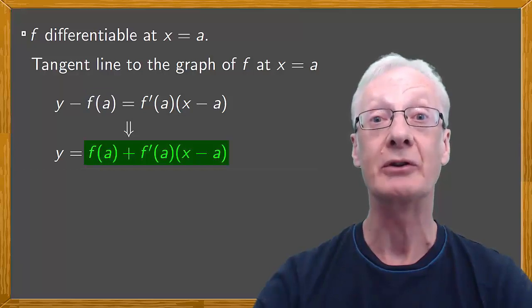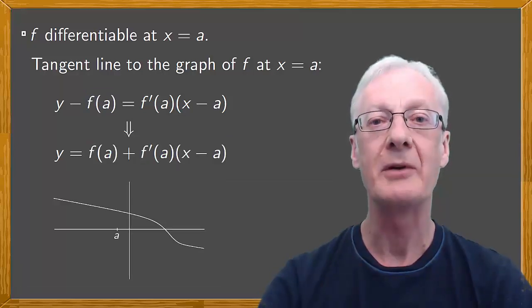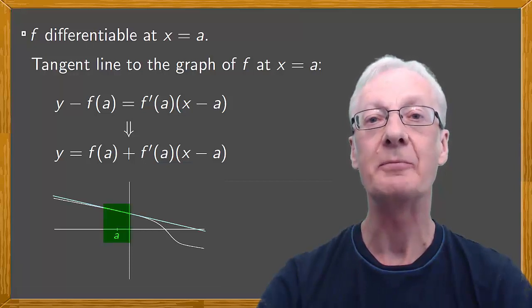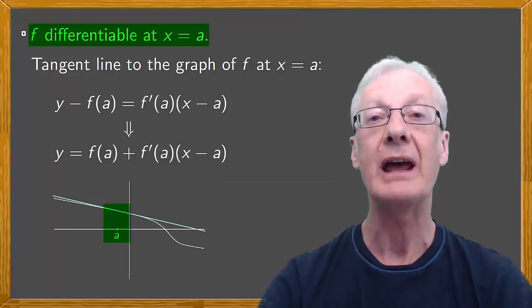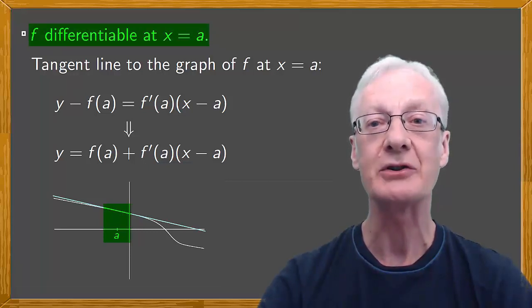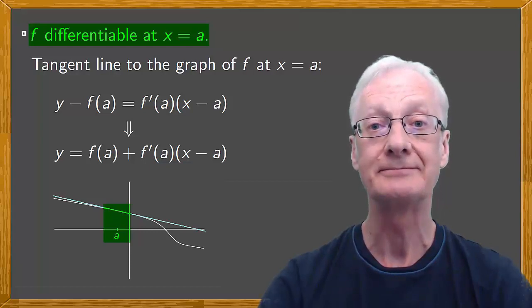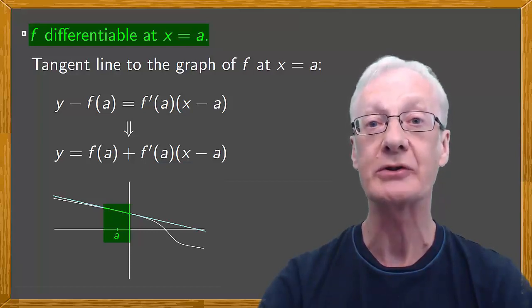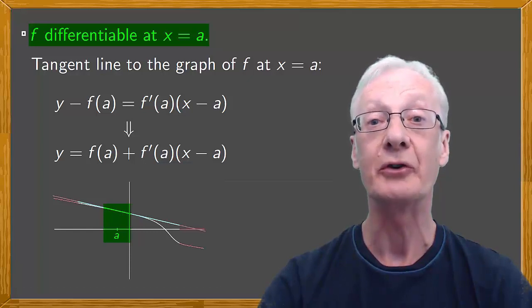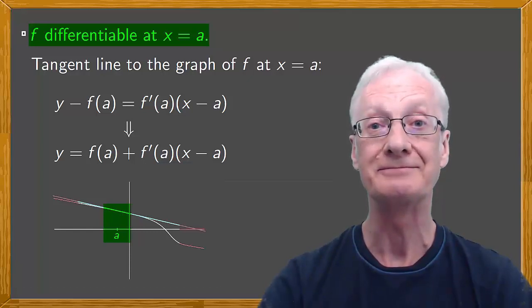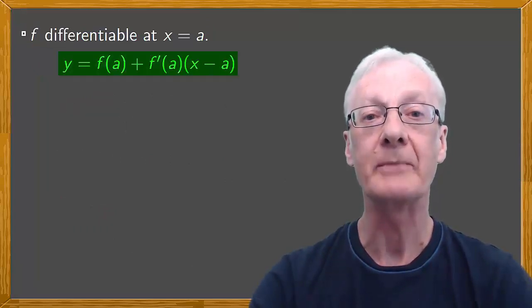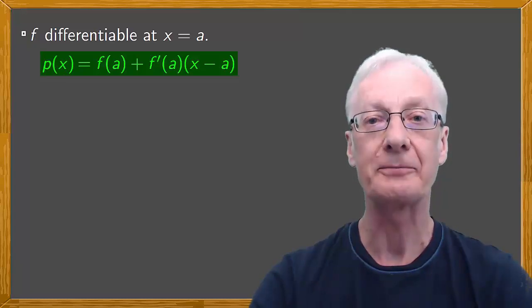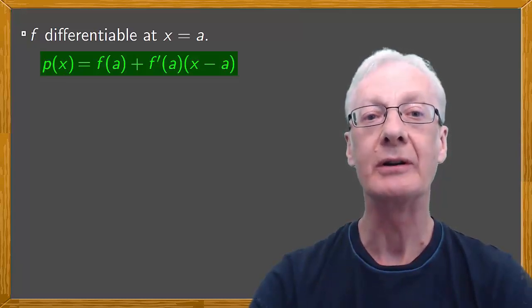So we have a polynomial of degree one. Now remember that the tangent at x equals a is the best approximation to the function near x equals a. In other words, when f is differentiable at a, the tangent approximates the function very well. This is only true providing we're close to a. If we move further away, then we don't know what will happen. So for the equation of the tangent, we have a polynomial of degree one. Let's call it p(x).